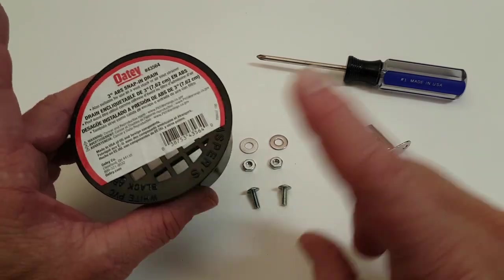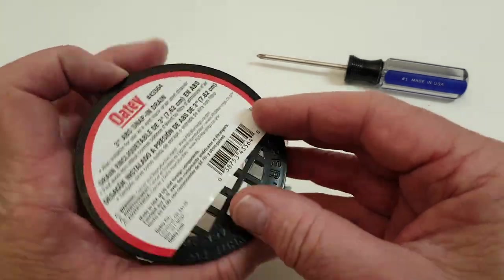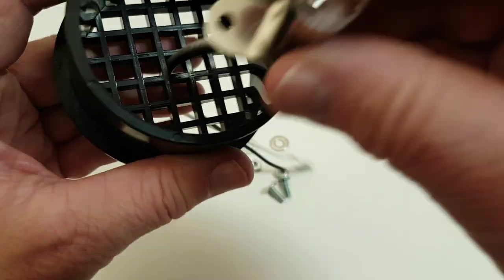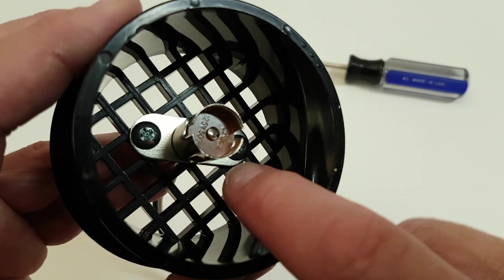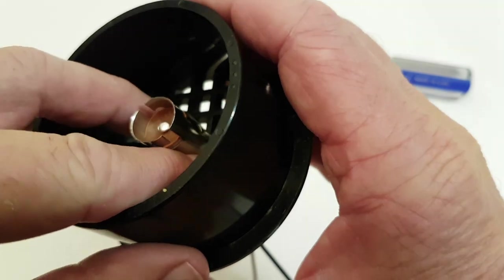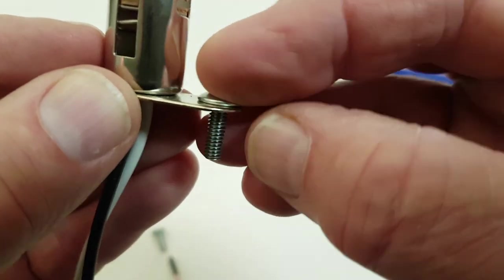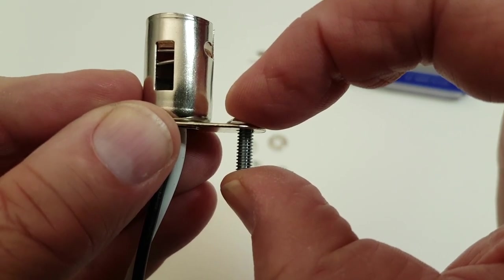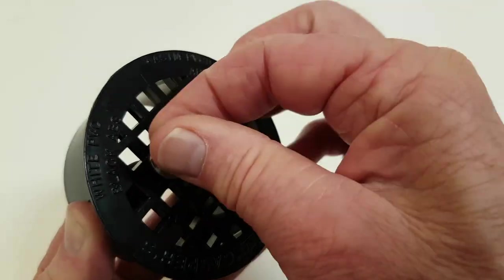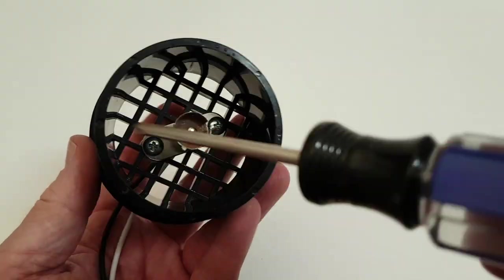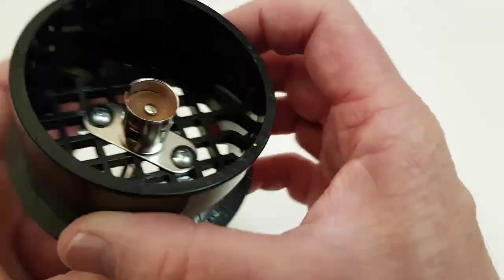We are now ready to attach the light bulb to the drain piece. From the inside of the ABS drain feed the wires on the socket base through the center hole of the ABS drain. Attach the mounting flange onto the drain by using two short machine screws that fit through the holes on the flange and are long enough to go through both the socket base and the thickness of the drain. Then slip a washer over the ends of the screws followed by a nut. Tightening the nuts will secure the socket base to the inside of the drain.